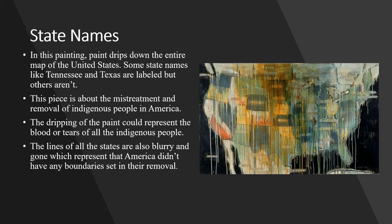Another painting is State Names. In this painting, paint drips down the entire map of the United States. Some states' names like Tennessee and Texas are labeled, but others aren't. This piece is about the mistreatment and removal of Indigenous people in America. The dripping of the paint can represent the blood or tears of all the Indigenous people. The lines of all the states are also blurry and gone, which represents that America didn't have any boundaries set when they removed all the Native American people.